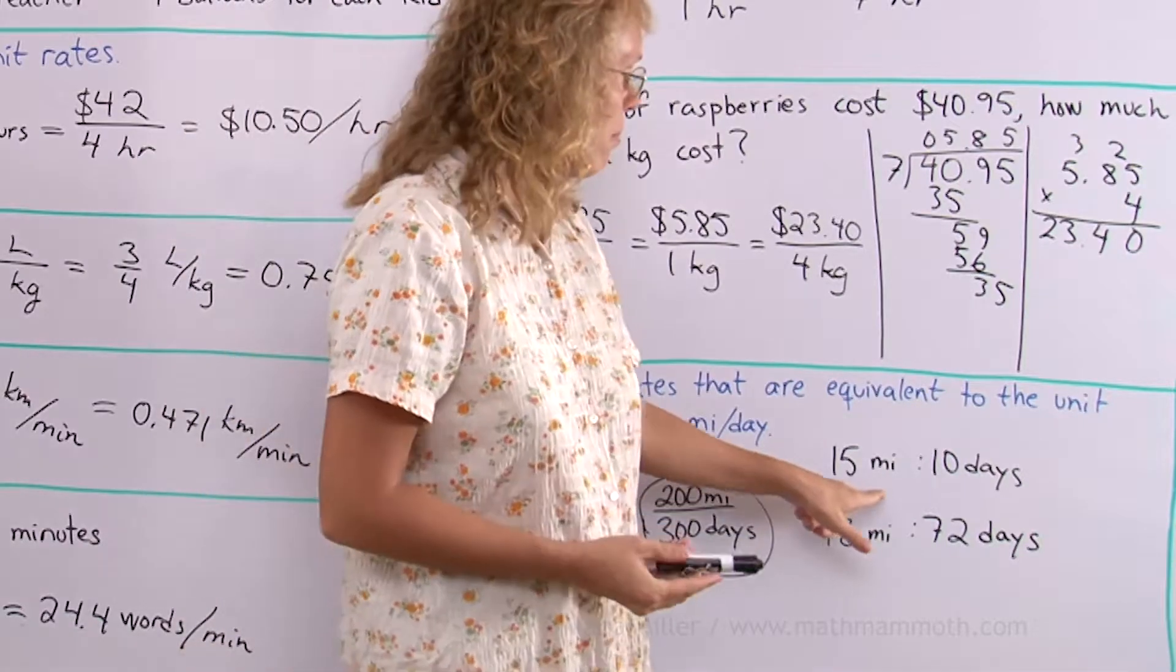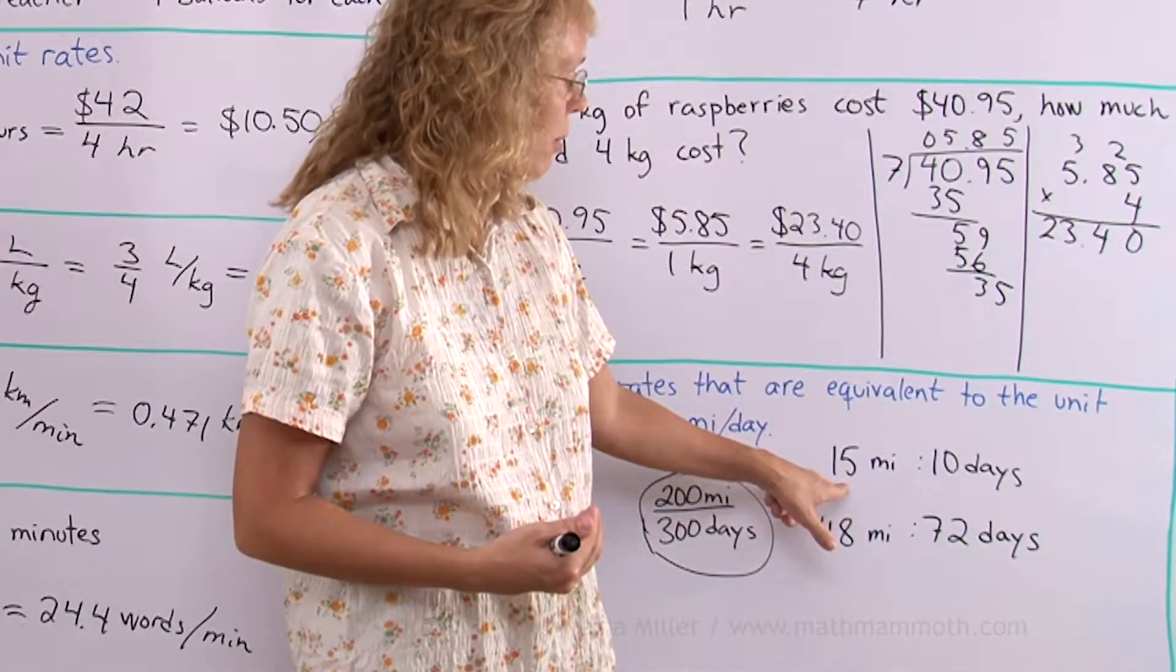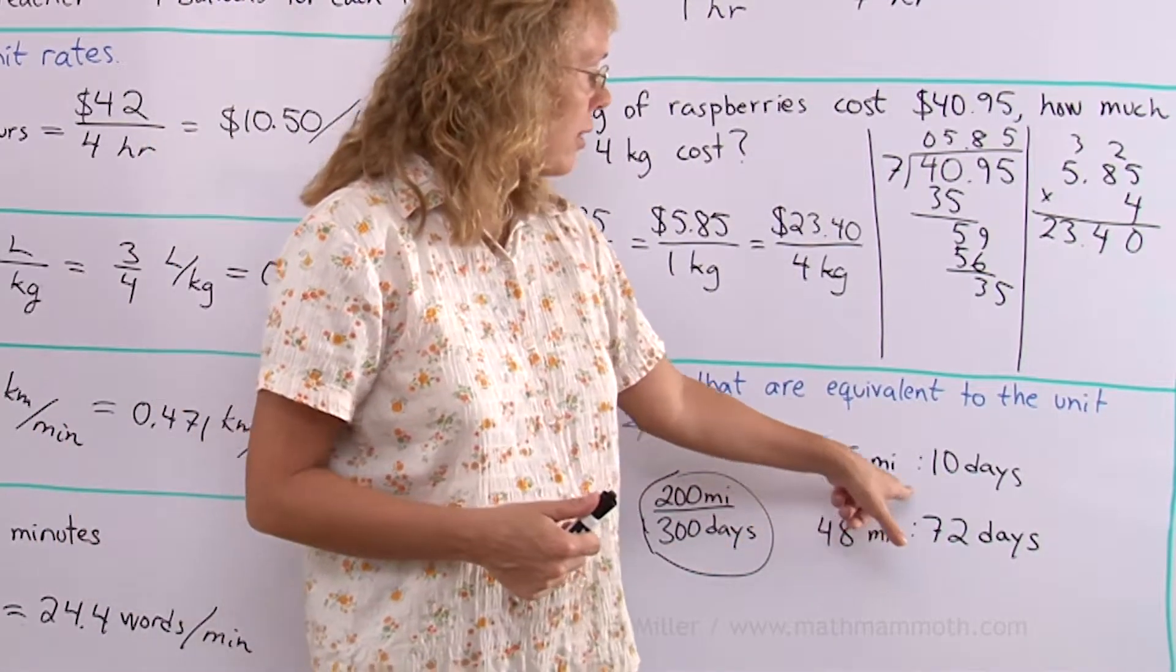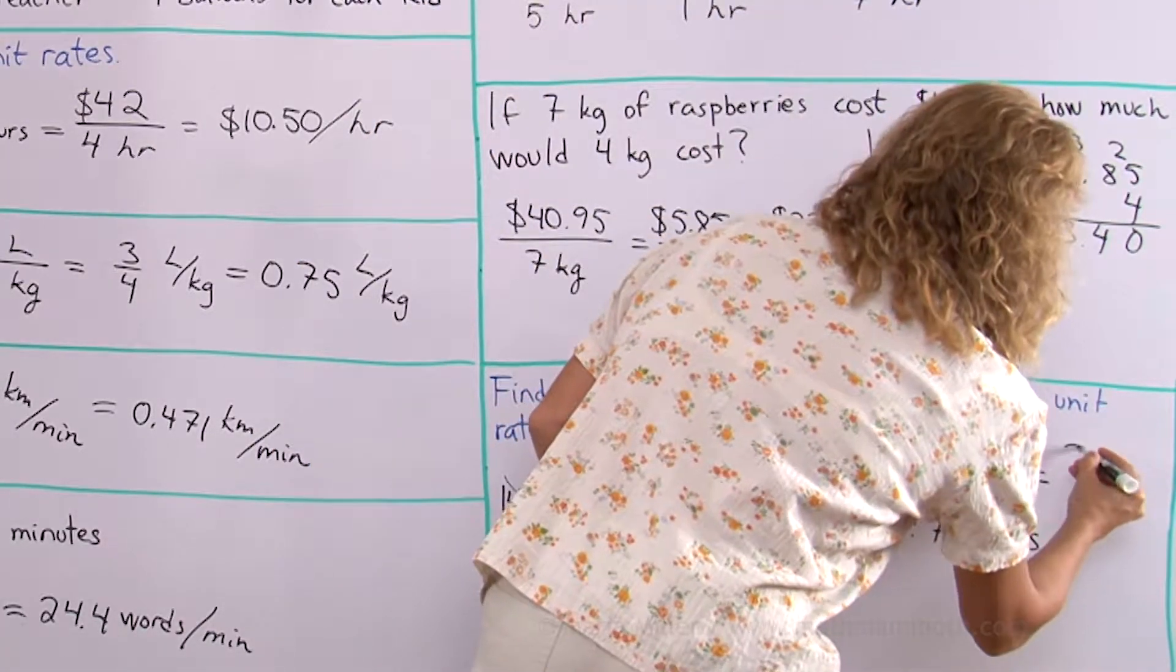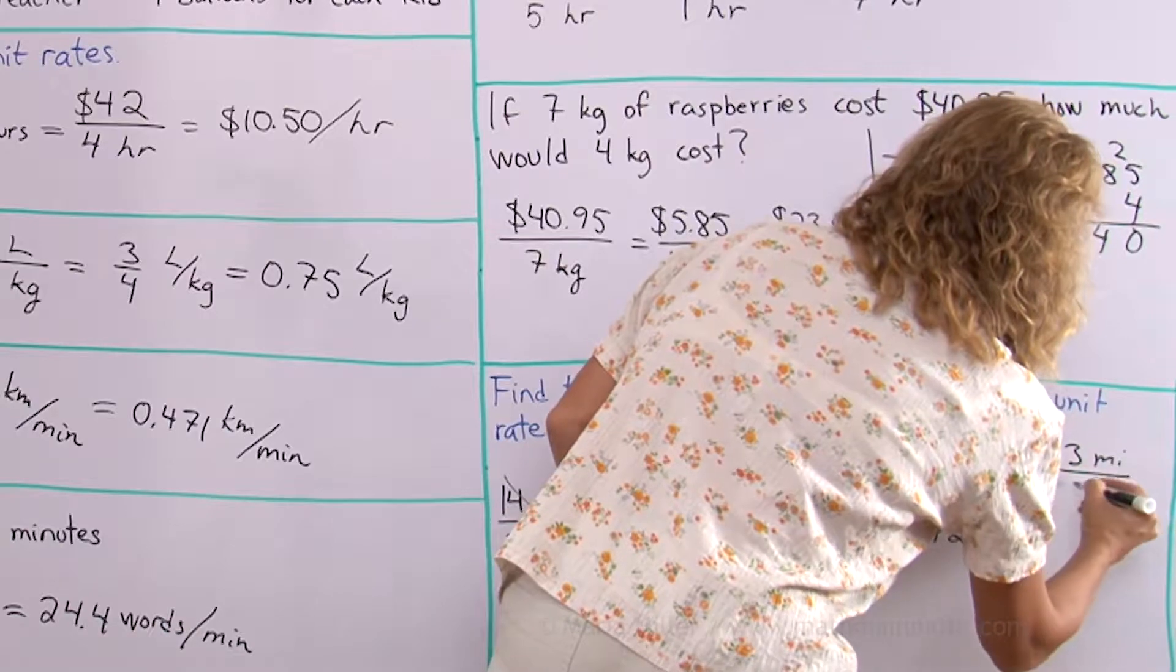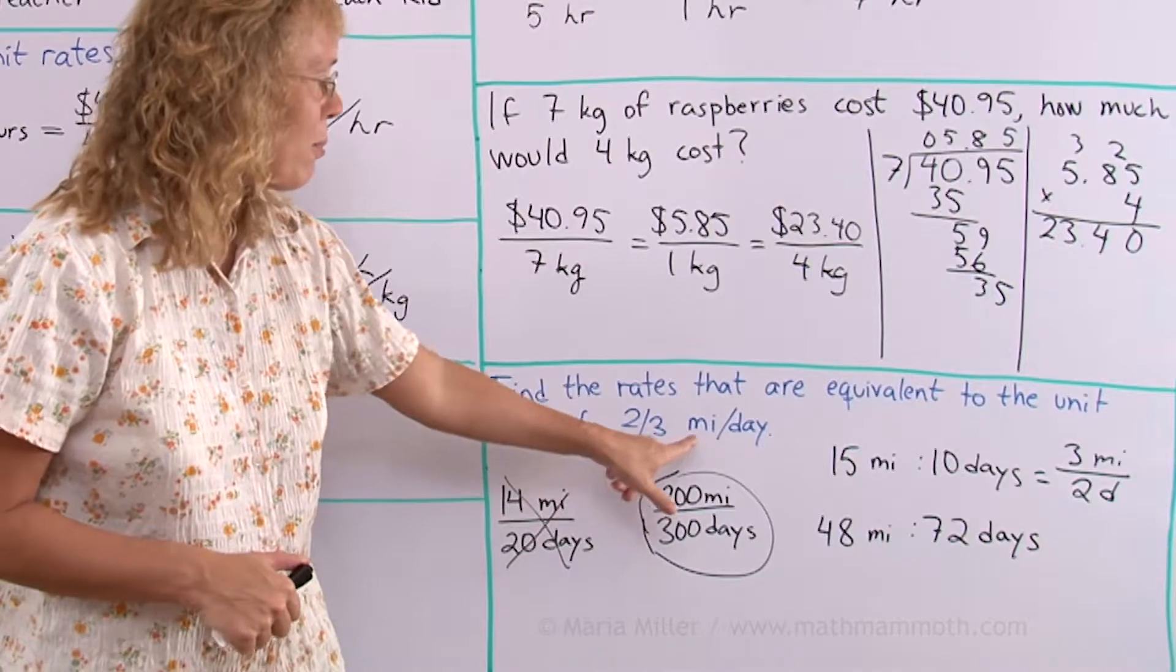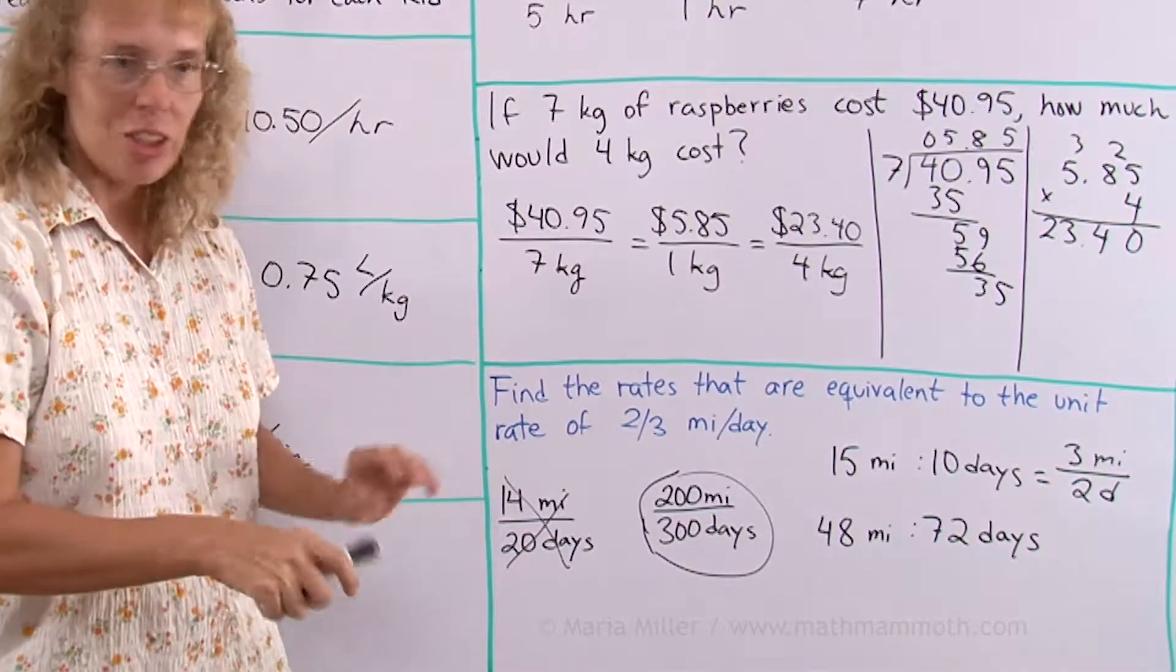Now here, 15 miles to 10 days. I can simplify. 15 and 10 are divisible by 5. So I will get 3 miles to 2 days. This is the same as 3 miles to 2 days. But that's not the same as 2 thirds of a mile per day. The 3 and 2 are flipped. So that's not equal.